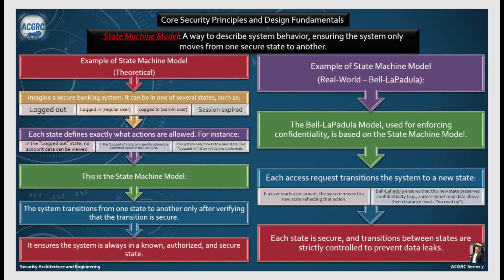For a real-world example, the Bell-LaPadula model used for enforcing confidentiality is based on the state machine model. Each access request transitions the system to a new state. If a user reads a document, the system moves to a new state reflecting that action. The Bell-LaPadula model ensures this new state preserves confidentiality — for example, a user cannot read data above their clearance level. Each state is secure and transitions between states are strictly controlled to prevent data leaks.